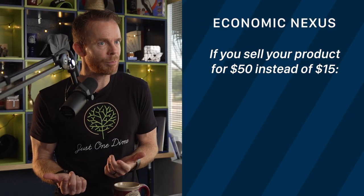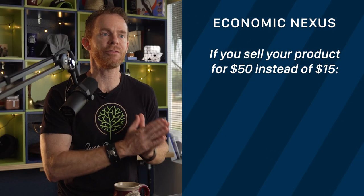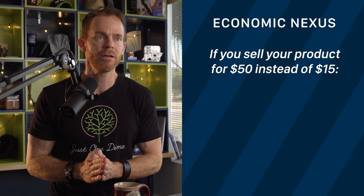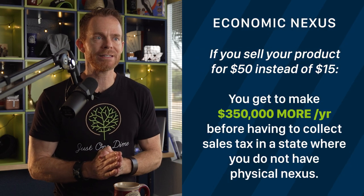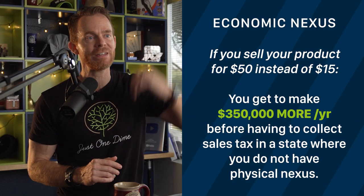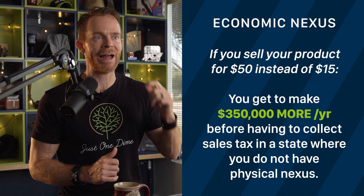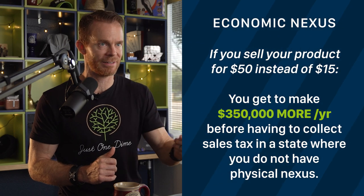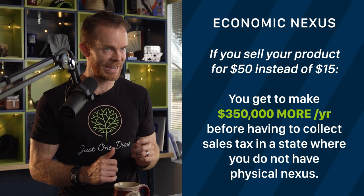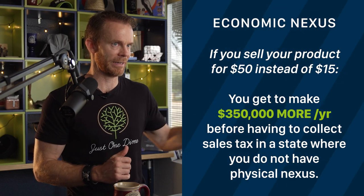We preach all the time about choosing products with high sales prices — this is just another example of why selling products at a higher price works in your favor. If you were selling your product for only $15, as soon as you reach $150,000 in annual sales, you are now obligated to collect and remit sales tax for the state of Ohio. Using our example, when selling a product for $50 instead of $15, you get to make $350,000 more a year before having to collect sales tax in a state where you do not have physical nexus.